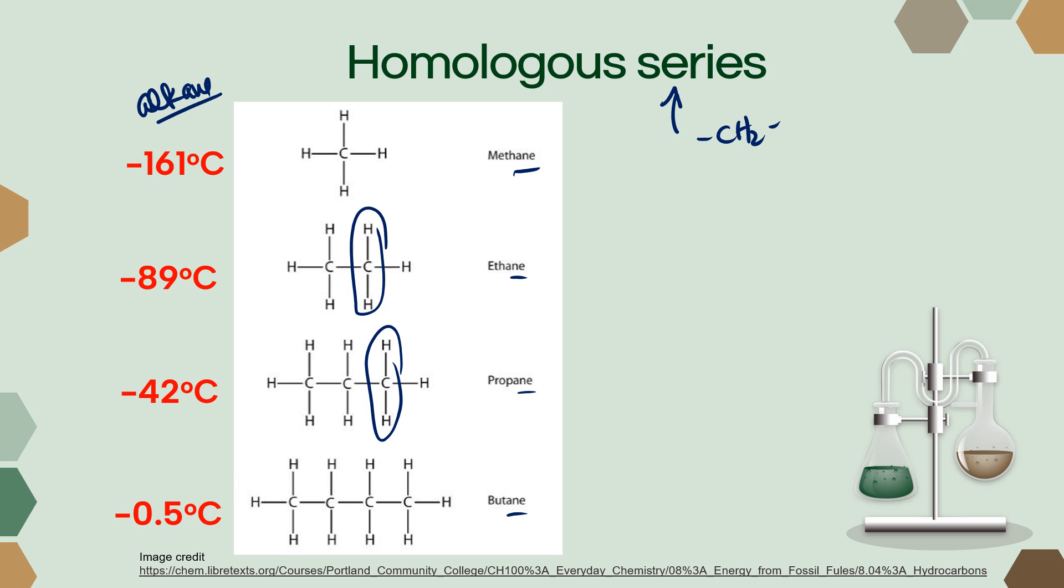They have similar chemical properties, and their physical properties show a gradual change as that carbon chain lengthens. We're looking here at boiling points of these alkanes. Notice that methane has the lowest boiling point, and that boiling point increases as we lengthen the carbon chain.